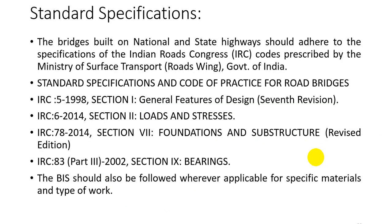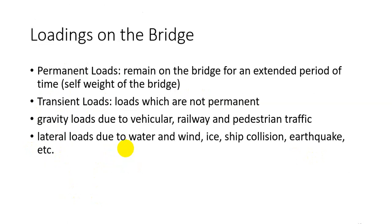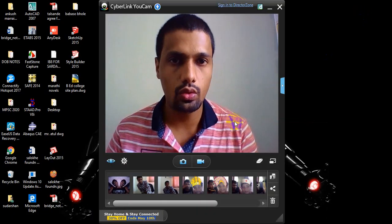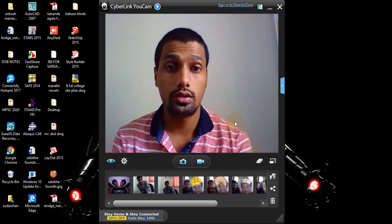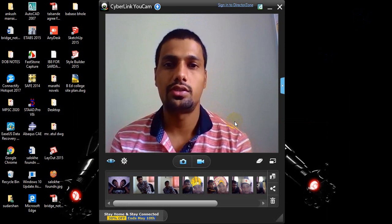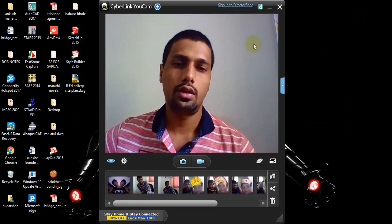Standard specifications can be found in IRC 5, IRC 6, IRC 78, and IRC 83 for all bridge design. Loadings on the bridge will be covered in detail in the next lecture — generally they are permanent loads, transient (temporary) loads, gravity loads, and lateral loads. This ends the first unit. We will continue with a quick review of the second unit and cover the remaining unit on bridge bearings in the next few lectures. Thank you.